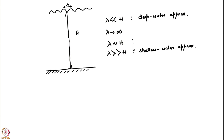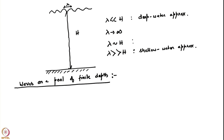We will look at the shallow water approximation in detail later. Let us first work out what is the correction to the dispersion relation when we have a pool of finite depth. So: waves on a pool of finite depth. Until now we have only done deep water — capillary waves, gravity waves, and capillary gravity waves.